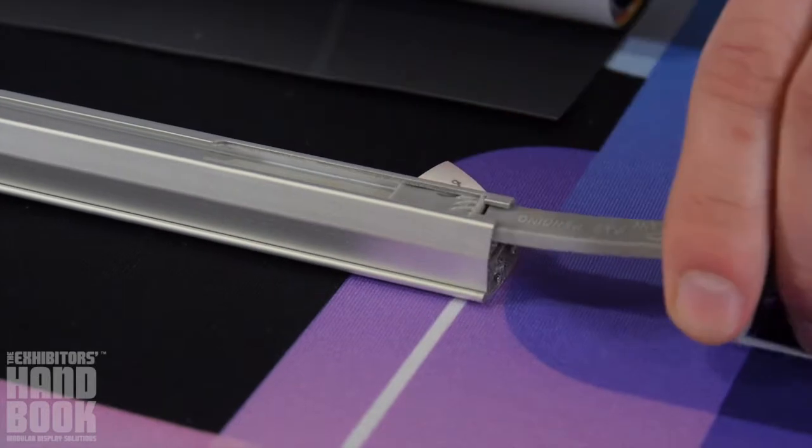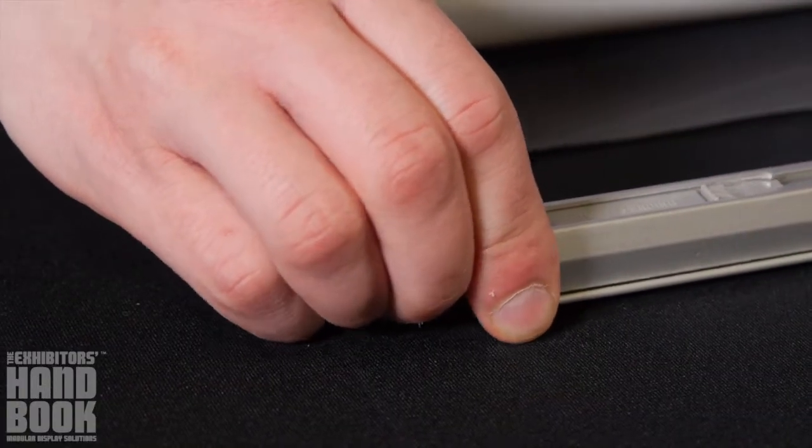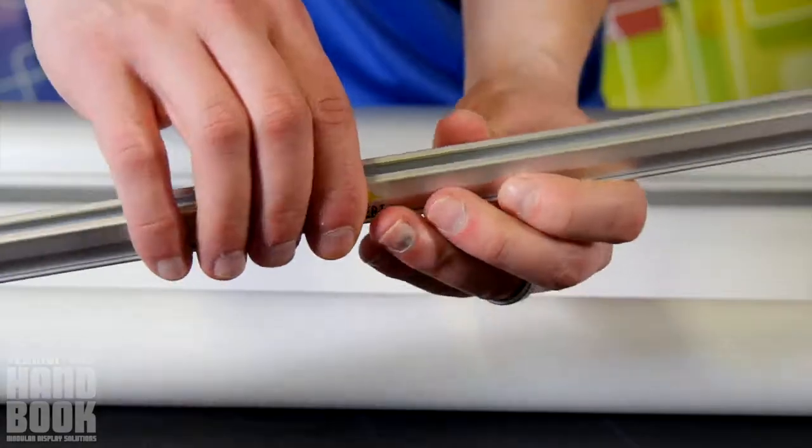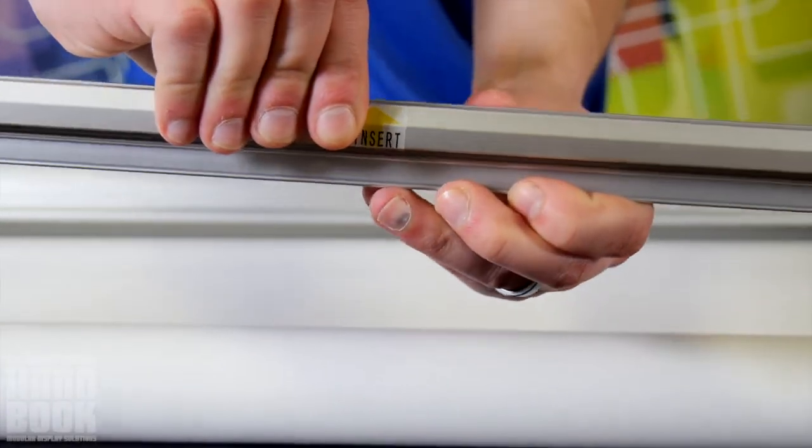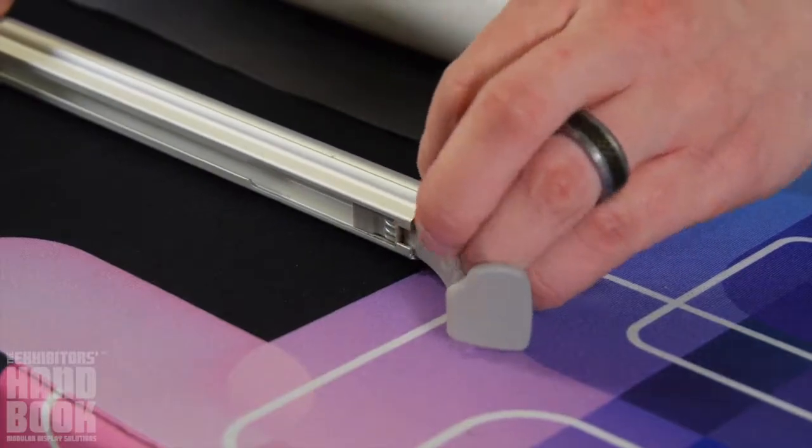Begin by pulling out the plastic end caps on either side, opening the snapping portion of the rail, and removing the adhesive slider.